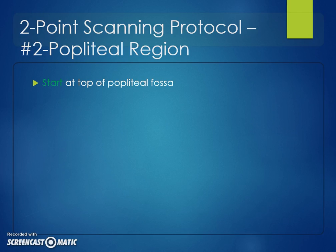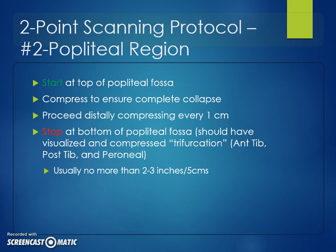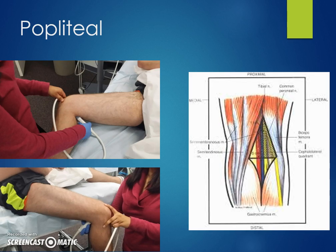For the popliteal region, start at the top of the popliteal fossa and work your way down, compressing to ensure all deep veins collapse, stopping once the popliteal vein trifurcates — usually before scanning into the calf. Compress this entire region at least two to three times.